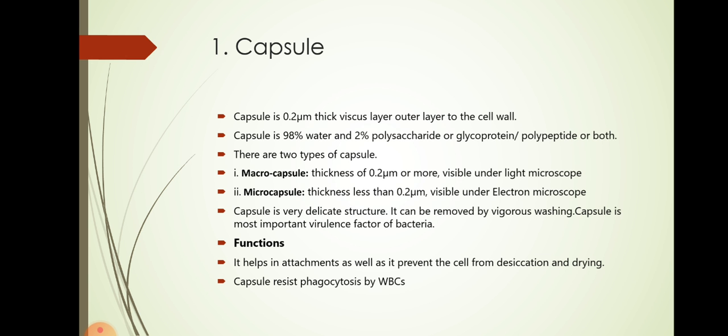Macrocapsule thickness is about 0.2 micrometers or more, visible under light microscope. While microcapsule thickness is less than 0.2 micrometers and visible only under electron microscope. Capsule is very delicate structure. It can be removed by vigorous washing. Capsule is most important virulence factor of bacteria. Mostly virulent type of bacteria bear these capsules. The function of capsule: it helps in attachment as well as it prevents the cell from desiccation and drying. Capsule resists phagocytosis by white blood cells.